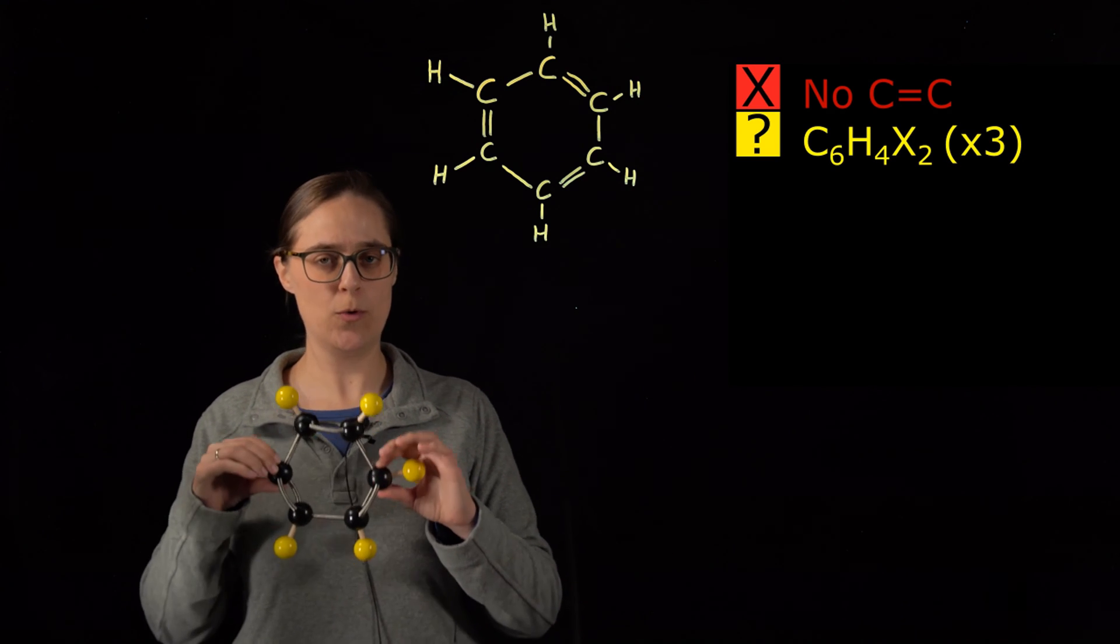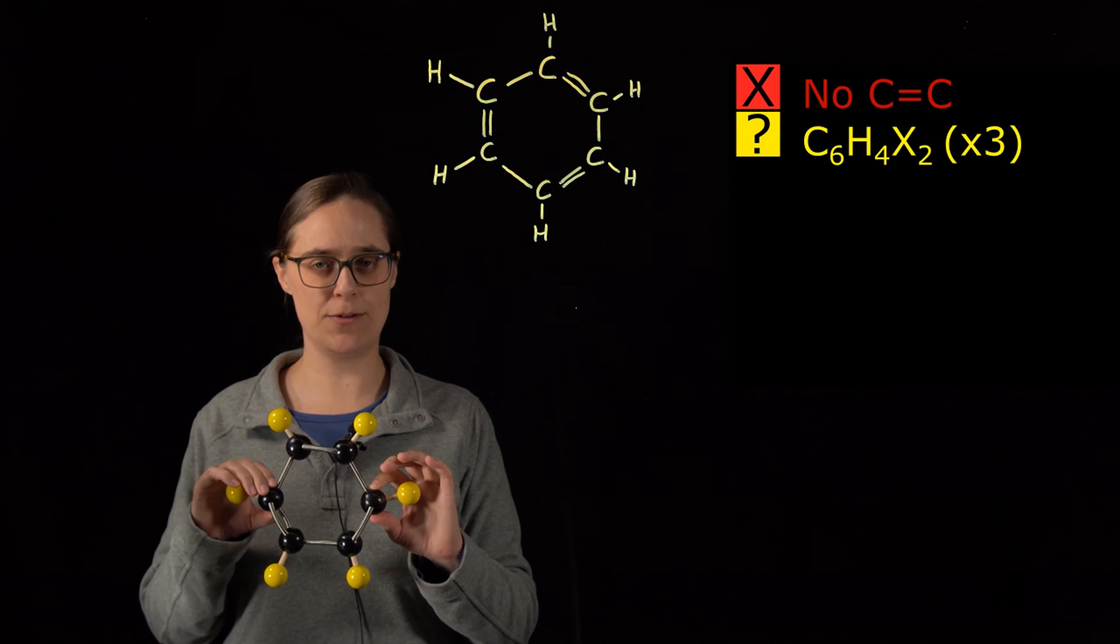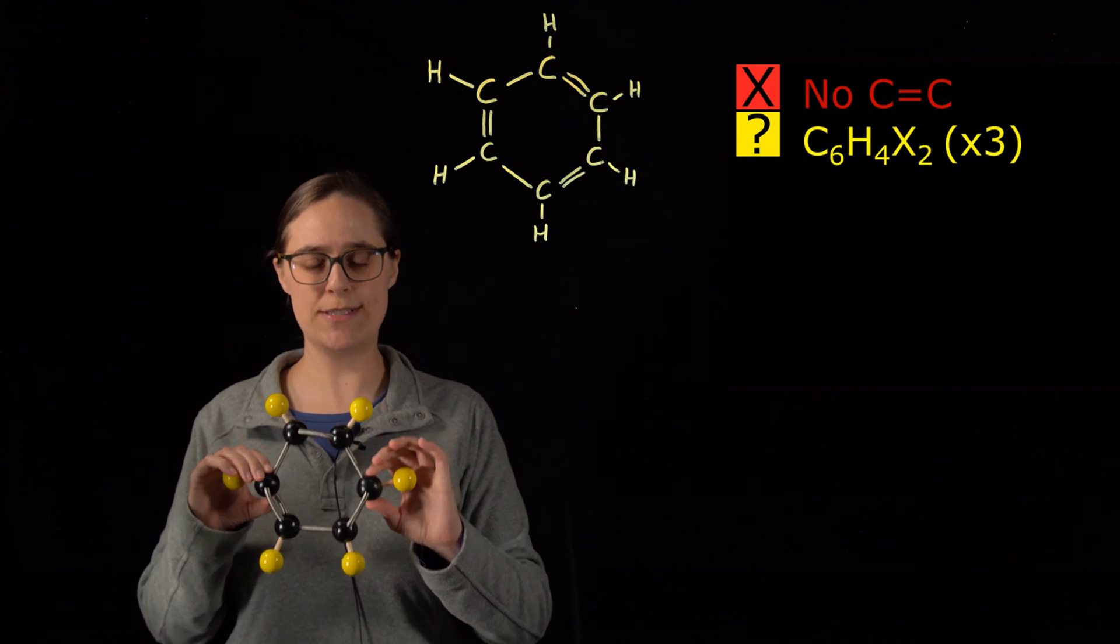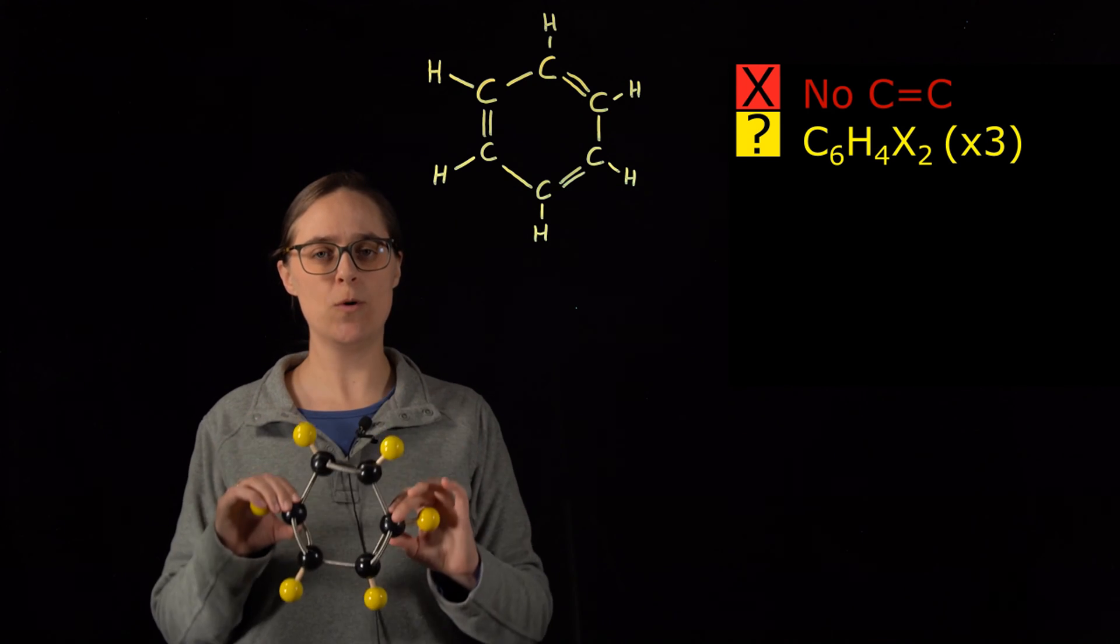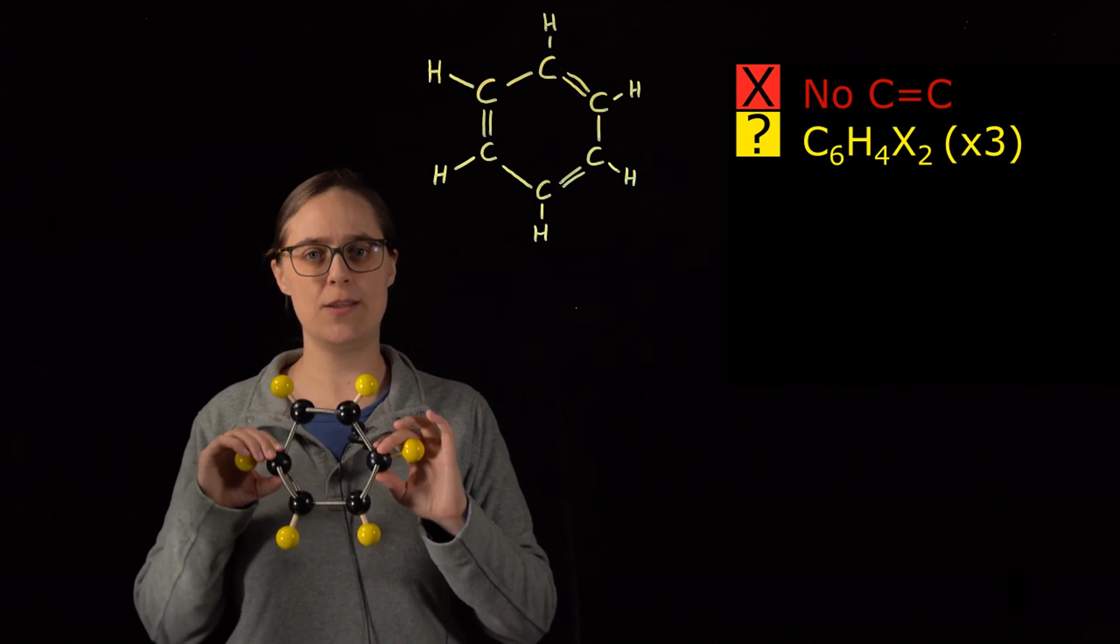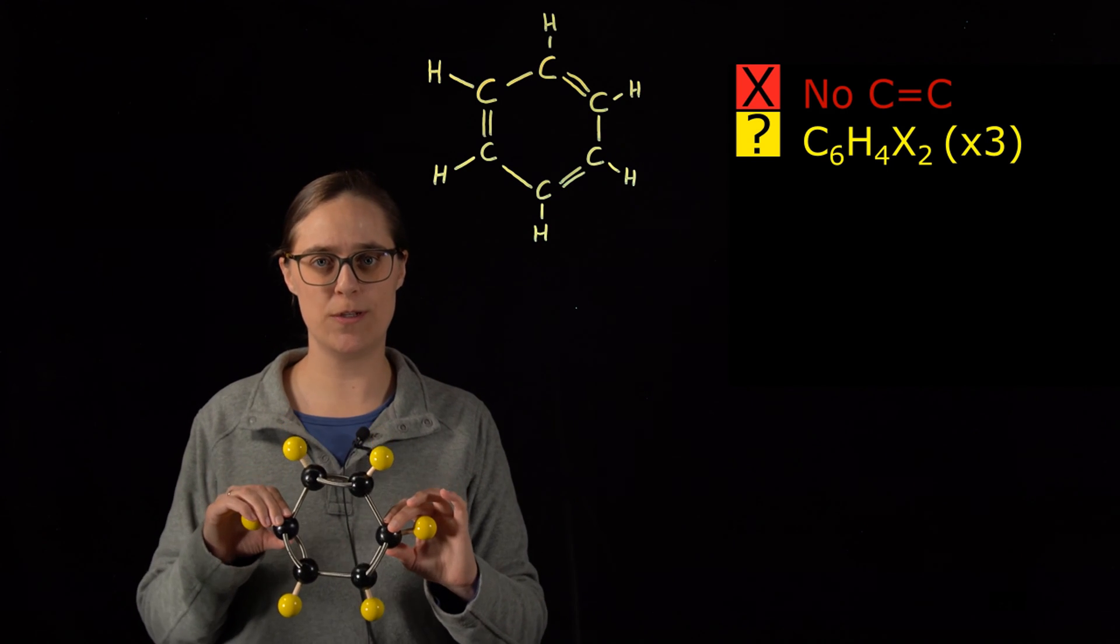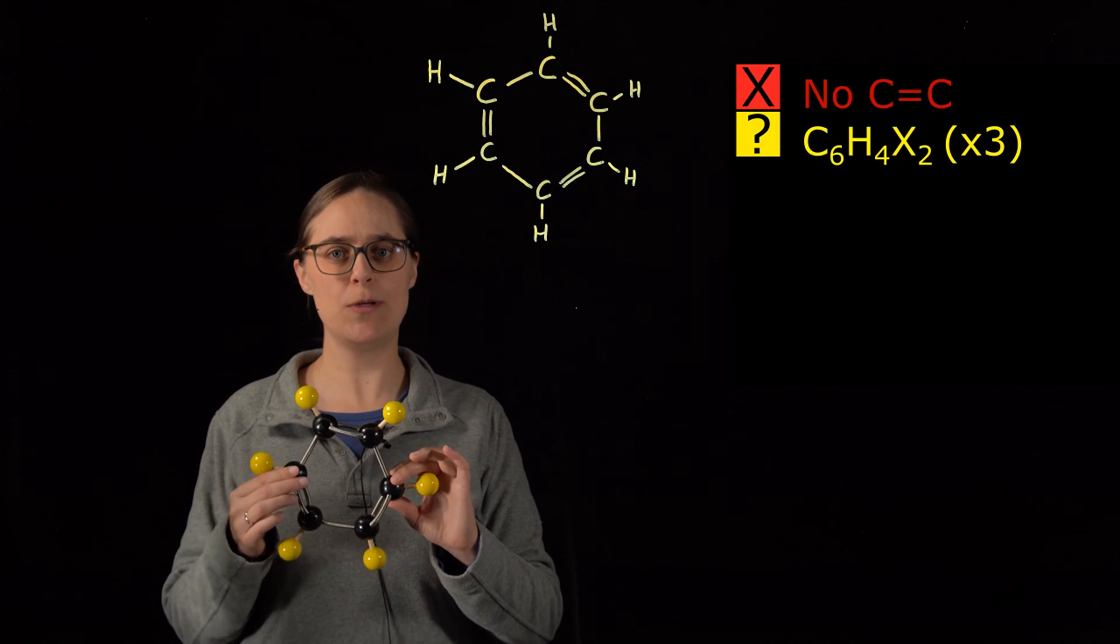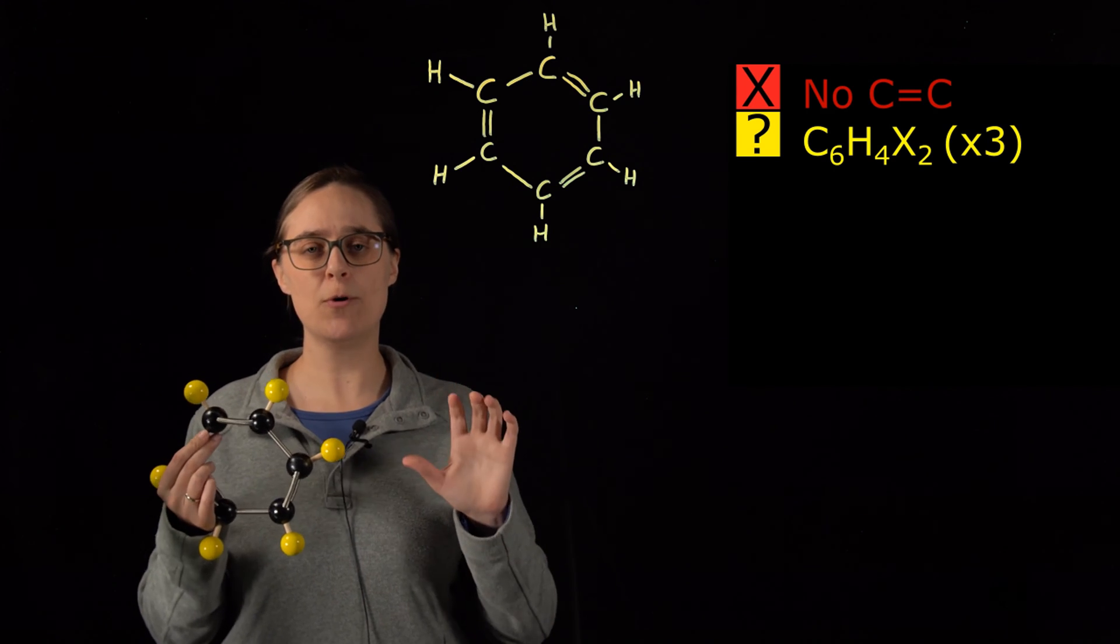In 1901, we did get confirmation that benzene contained six carbons in a ring. So that was one step closer to saying Kekulé was on the right track. But it wasn't until the 1930s that we got the last piece of the puzzle that we needed to finally figure out what this structure was. So in the 1930s, we were able to measure these carbon-carbon bond lengths, and they were all the same.